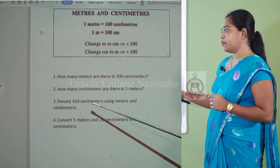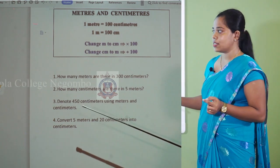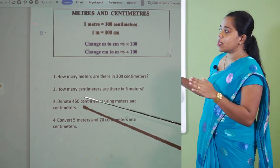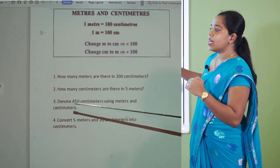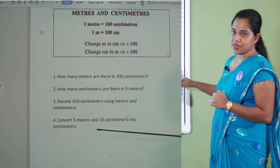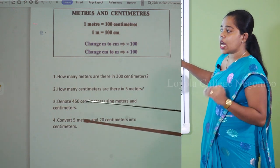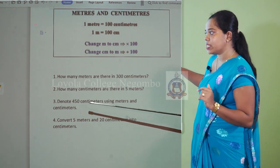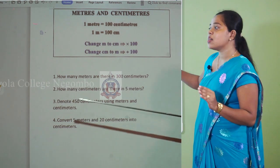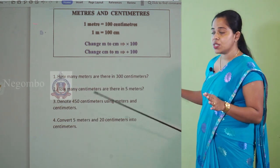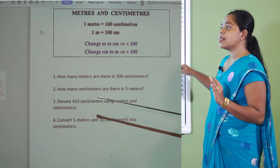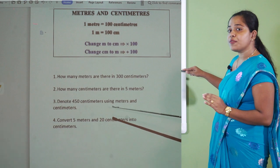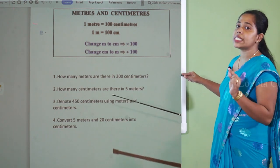Third one: Denote 450 centimeters using meters and centimeters. Within 450, you can write it as 400 centimeters plus 50 centimeters. 400 centimeters means 4 meters, and the remaining 50 centimeters are also there. So the answer is 4 meters and 50 centimeters — 4 m and 50 cm.